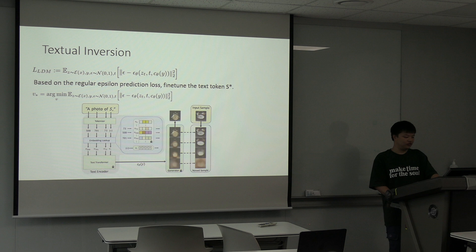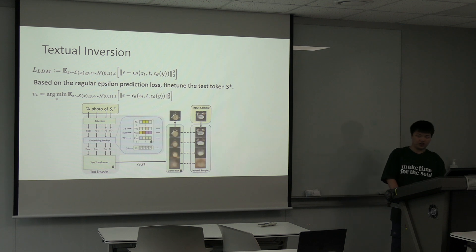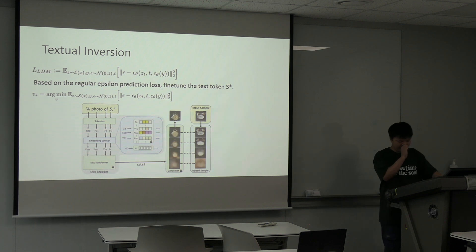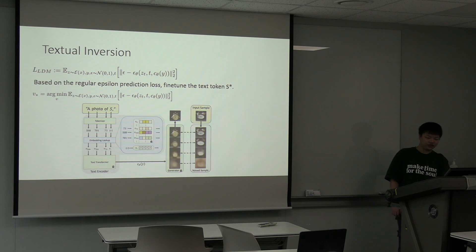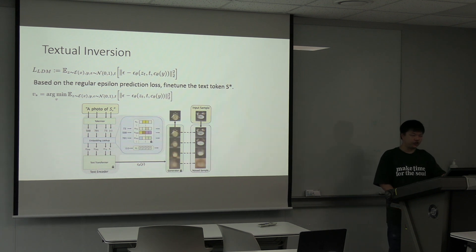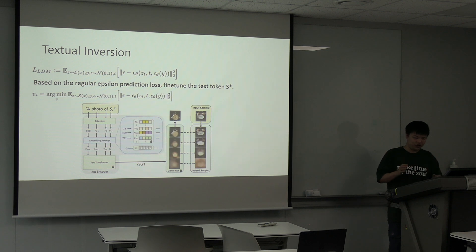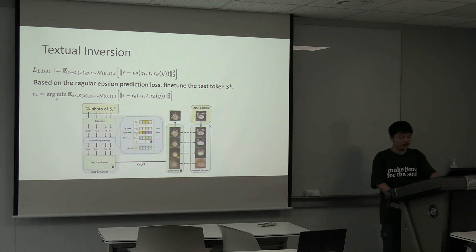The first paper on this technique is called Textual Inversion. A brief overview: as you can see here, this is the normal diffusion loss, which is the noise prediction loss. What Textual Inversion does is basically distill down the entire information about these sets of images into a particular text token, S*.